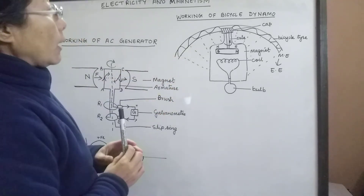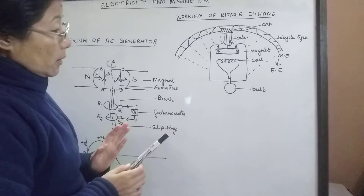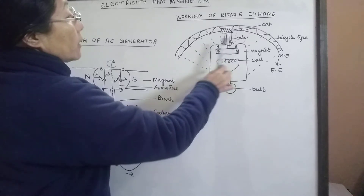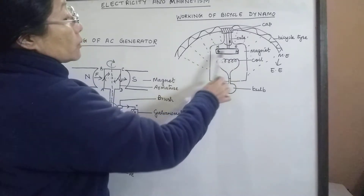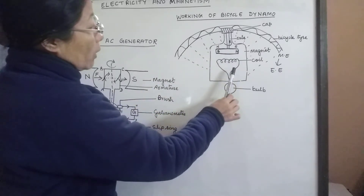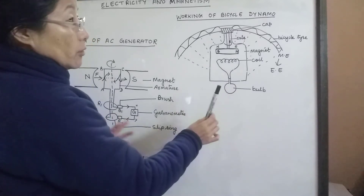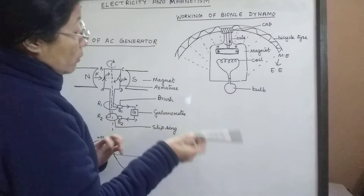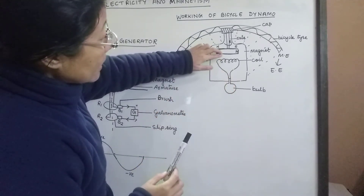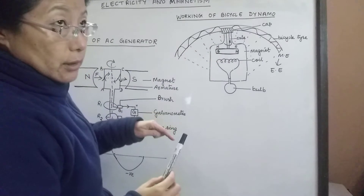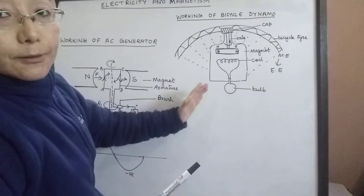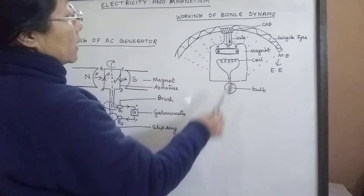If you want to produce a stronger current to make the bulb brighter, the speed of rotation of the magnet should be increased. Alternatively, by increasing the number of turns in the coil a stronger current can be produced. Other ways include using a stronger magnet or by decreasing the distance between the magnet and the coil. These are the ways by which more current can be produced in this device. This is the working of the bicycle dynamo.